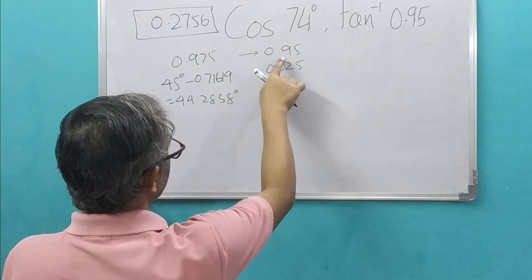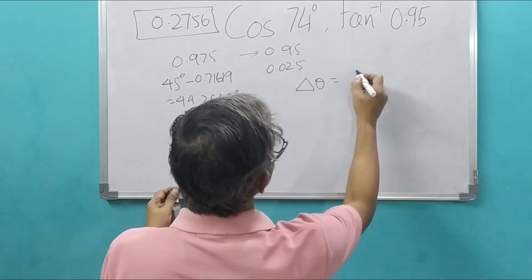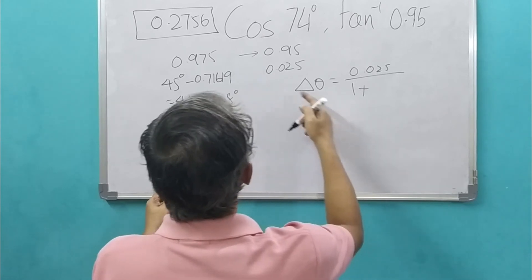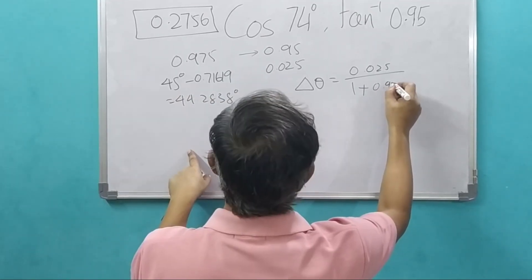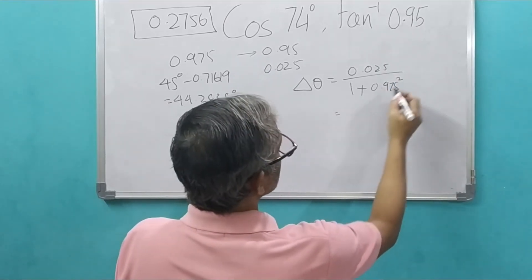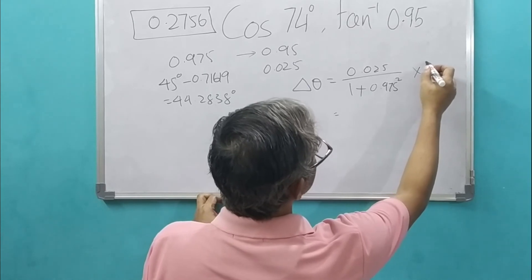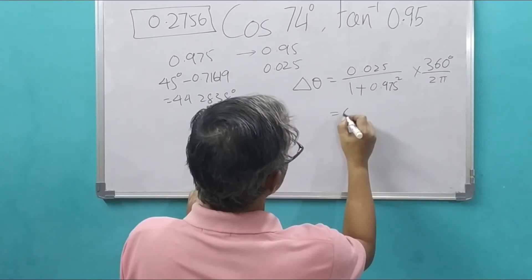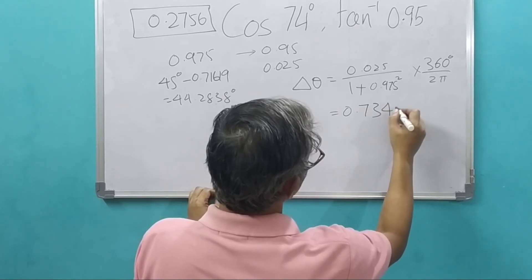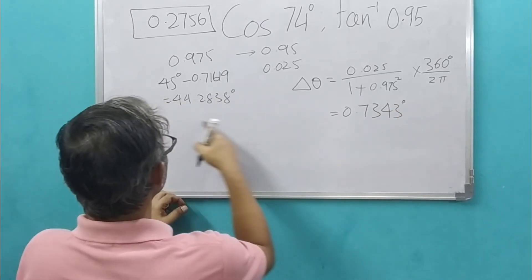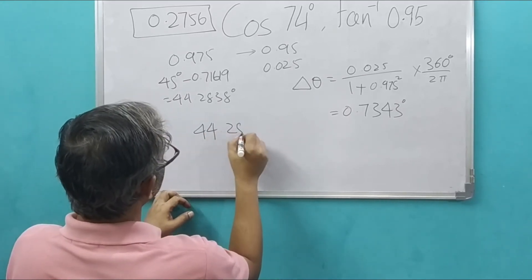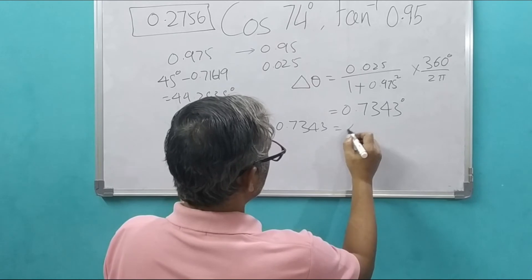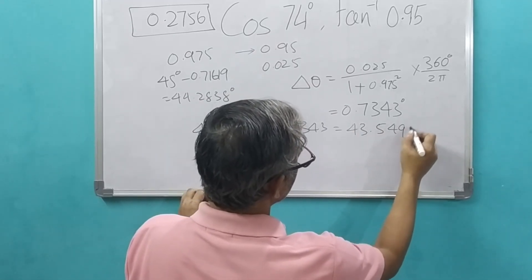Now we have to find out for 0.95. d theta would be equal to change, that means again 0.025 divided by 1 plus tan square theta for that this angle 0.975 square. This multiplied by the degrees gives 0.7343 degrees. Now this we have to reduce from this. So it makes 44.2838 minus 0.7343, 43.549 degrees.